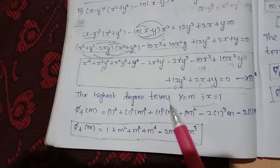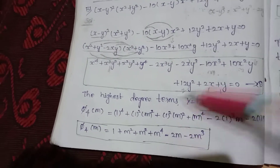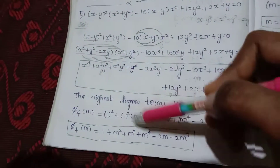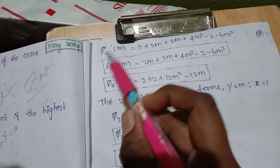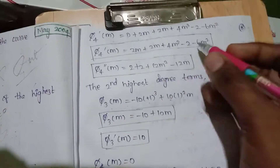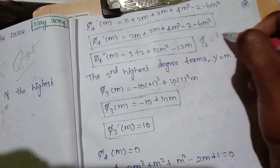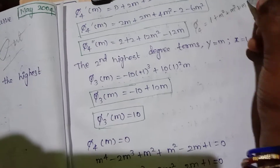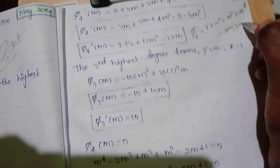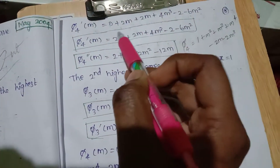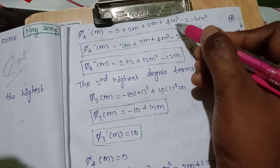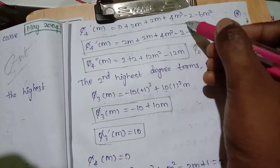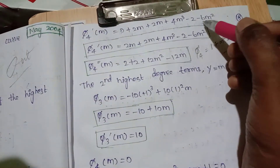So φ₄(m) equals 1 plus 2m² plus m⁴ minus 2m minus 2m³. Now differentiate: constant 1 gives 0, m² differentiates to 2m, m⁴ differentiates to 4m³, minus 2m differentiates to minus 2, and minus 2m³ differentiates to minus 6m².